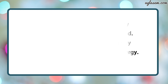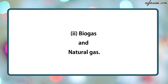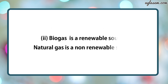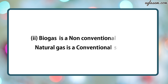Second part: differentiate between biogas and natural gas. Biogas is obtained from decomposition of organic waste, whereas natural gas is obtained as a by-product from the extraction of petroleum. Biogas is a renewable source, whereas natural gas is a non-renewable source. Biogas is a non-conventional source, whereas natural gas is a conventional source.